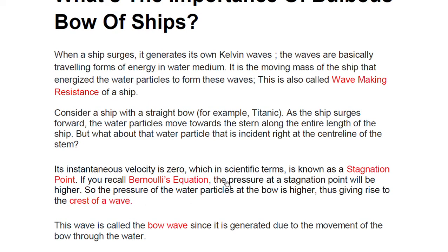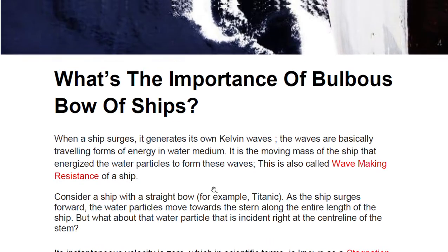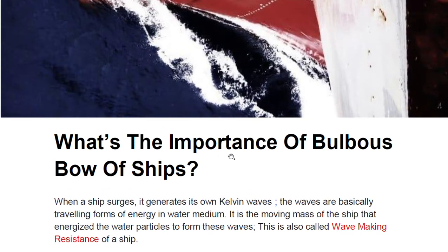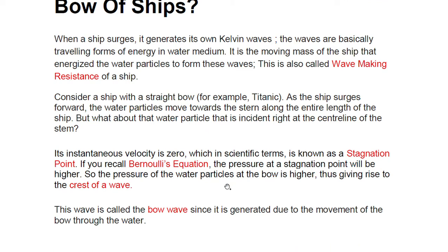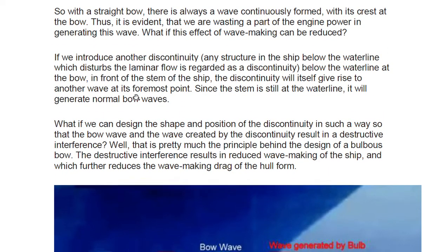As per Bernoulli's equation — which I have covered in a separate video — pressure at a stagnation point is higher. So the pressure of water particles at the bow becomes higher, giving rise to the crest of a wave. In a sinusoidal wave, we have crest and trough. The high pressure at the stagnation point creates a crest, and this wave is called the bow wave.